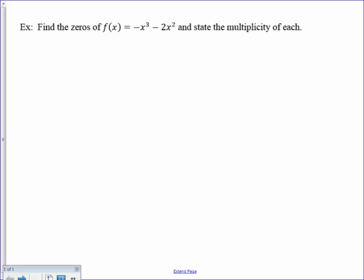First of all, to find the zeros of a polynomial function, you would set f of x equal to zero, and then solve by trying to factor, use quadratic formula, whatever method works the best for the problem. In most cases, we are going to try factoring, if we can.